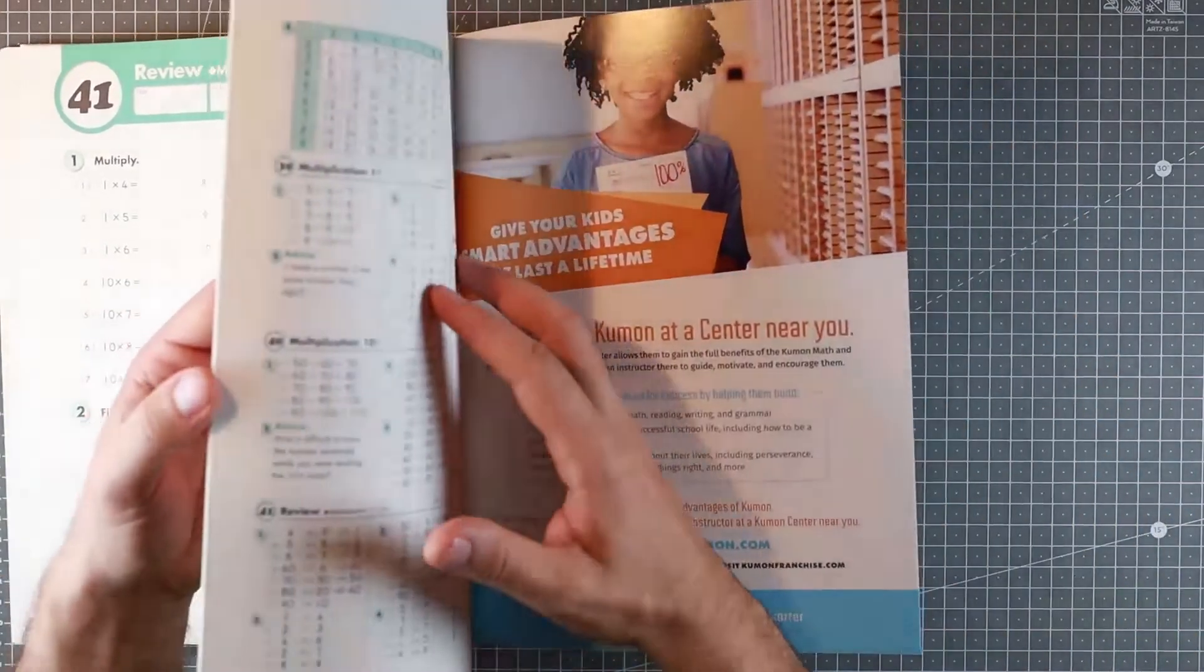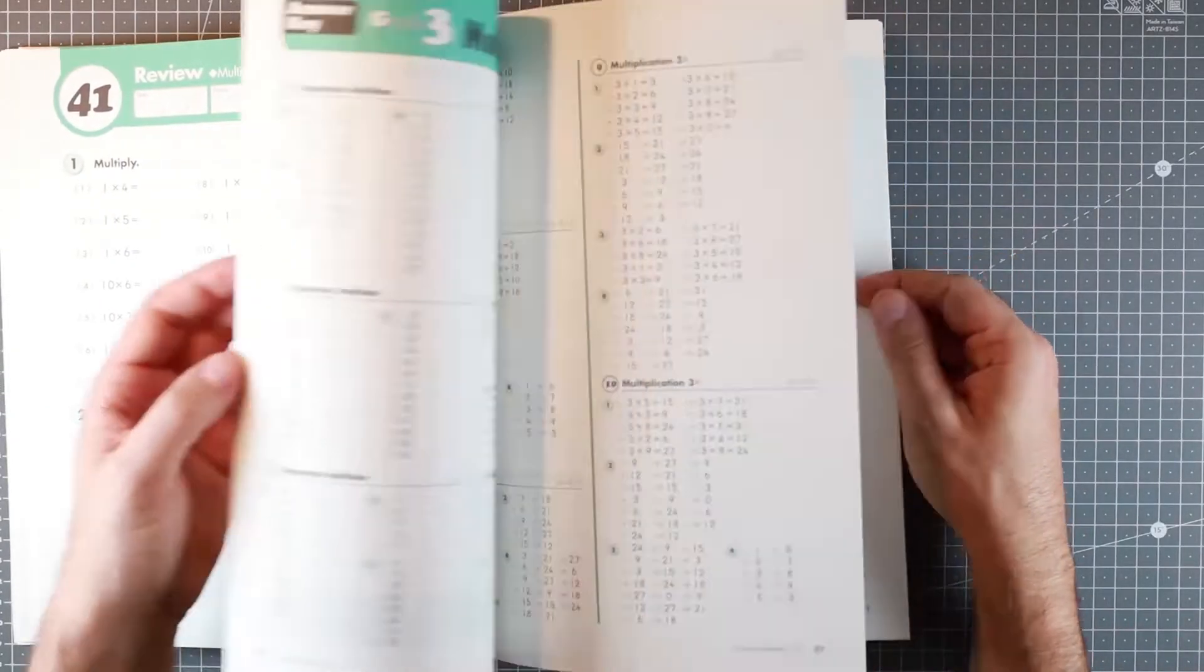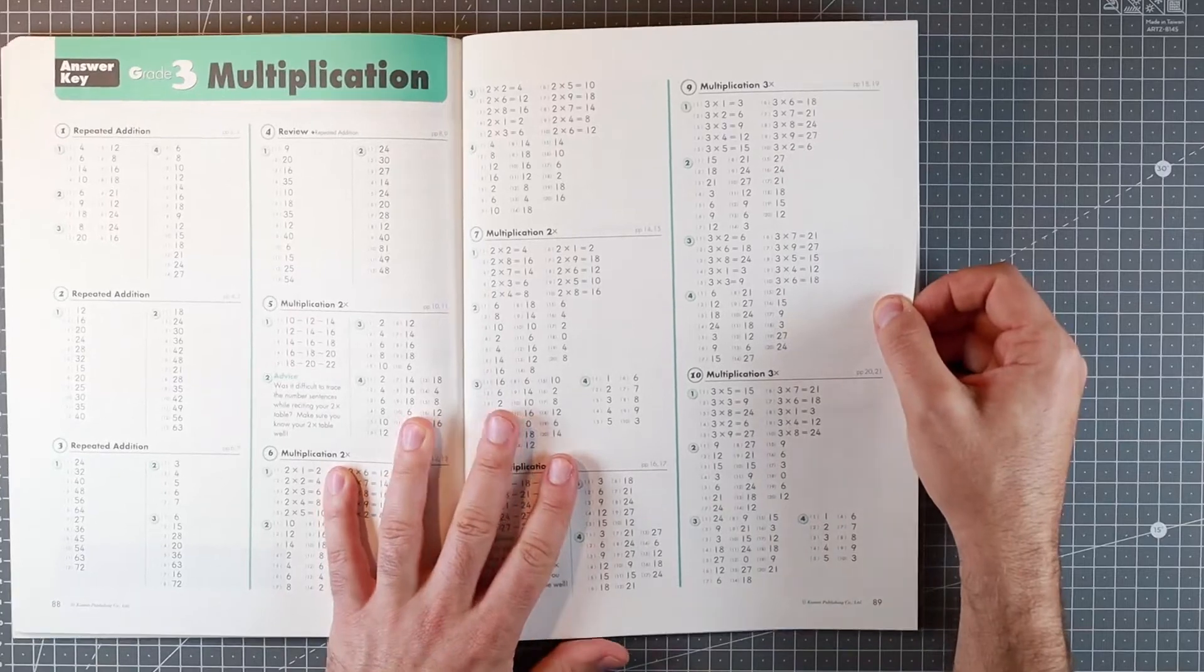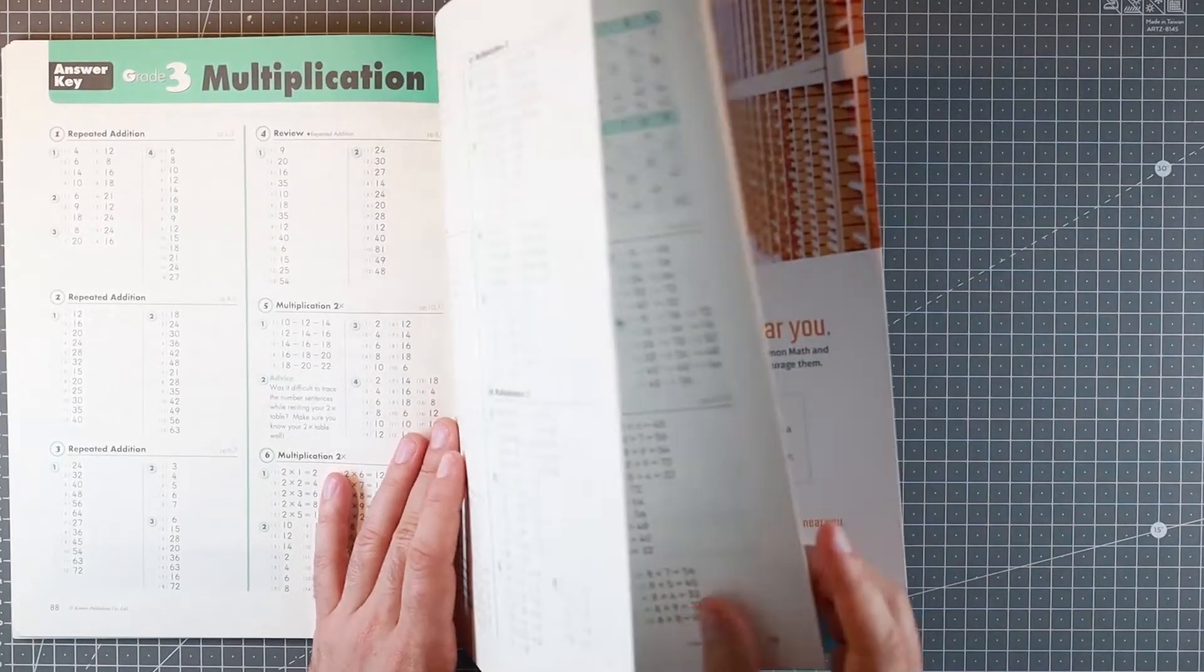Answer key at the back. It's well worth teaching your child how to correct their own work. So if you rip these out and give it to them after they've done the exercise, they can go and double check their work.